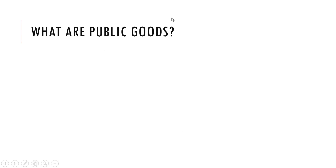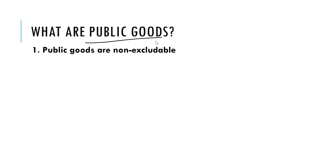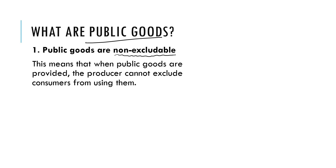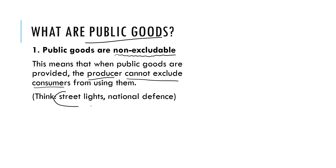Let's start by thinking about this idea of public goods. The first thing is that public goods are what's called non-excludable. Any economist will be able to tell you that this is a real term. This means that when the public good is provided, the producer — the person who makes or provides them — cannot exclude consumers from using them. A great example is the idea of streetlights. I can't stop someone from using a streetlight. It's just there. I can't fence it off. I can't charge for it. So that is a good example of a public good because I can't stop someone from using it.